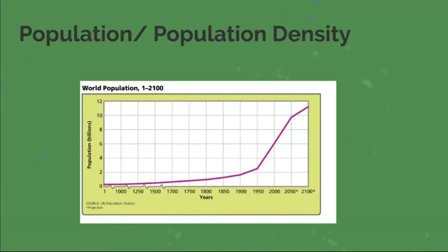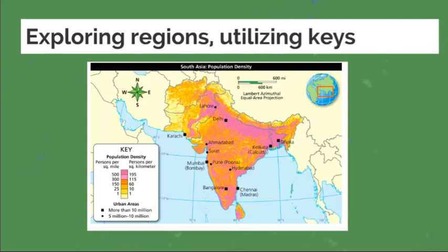When it comes to population and population density, we're going to be talking about how the human population has increased dramatically in the past 200 years and how it's expected to grow. By looking at this visual information, how can you predict the amount of people expected to be in 2100? How can you estimate the population from this line graph? Then we're going to be exploring regions.